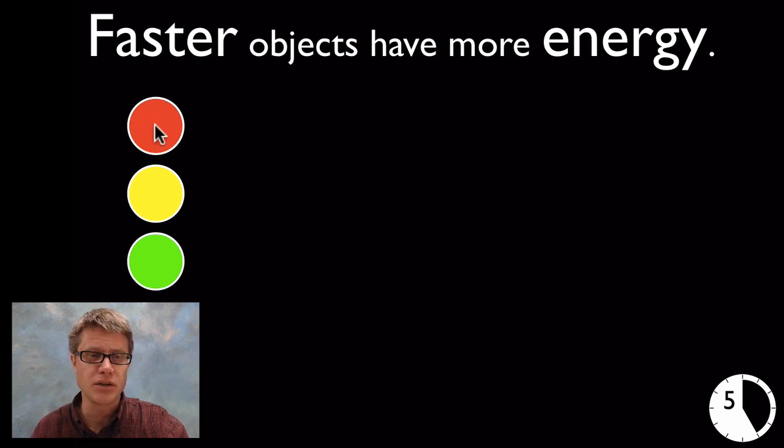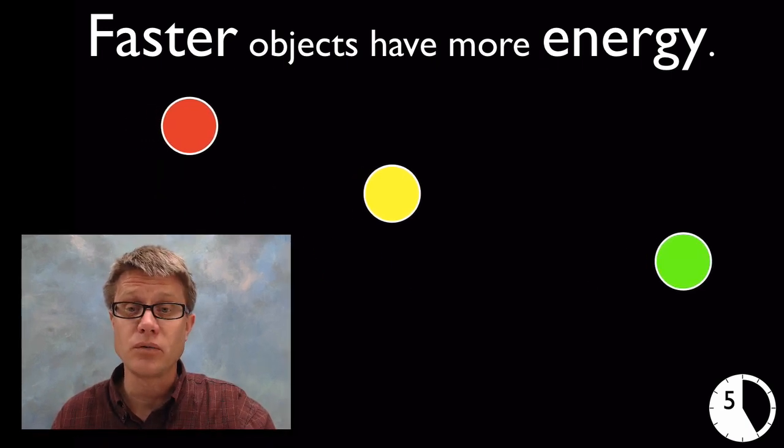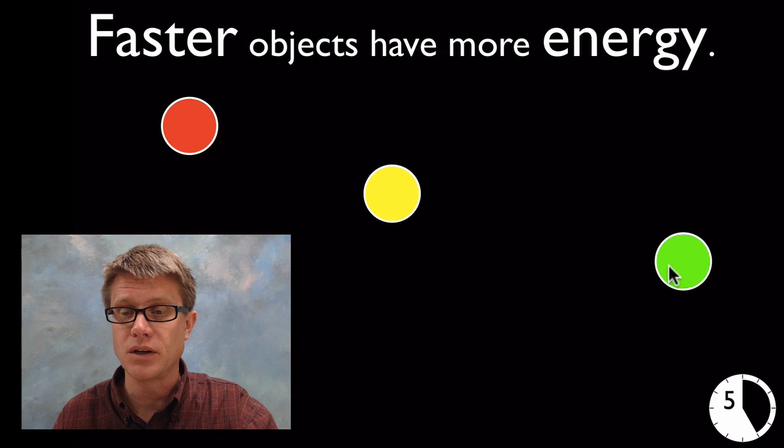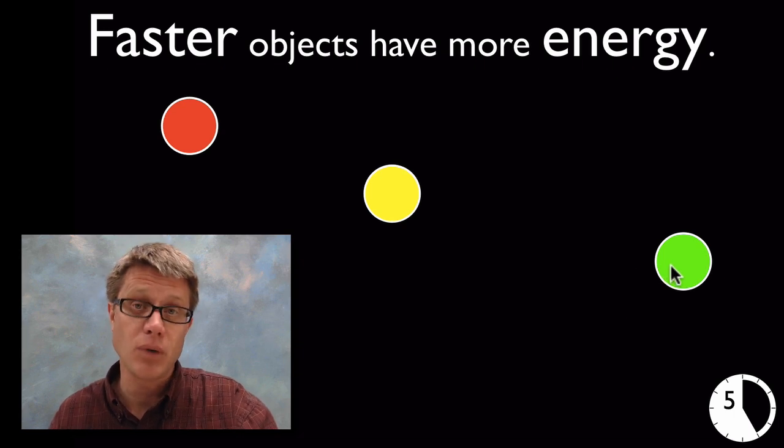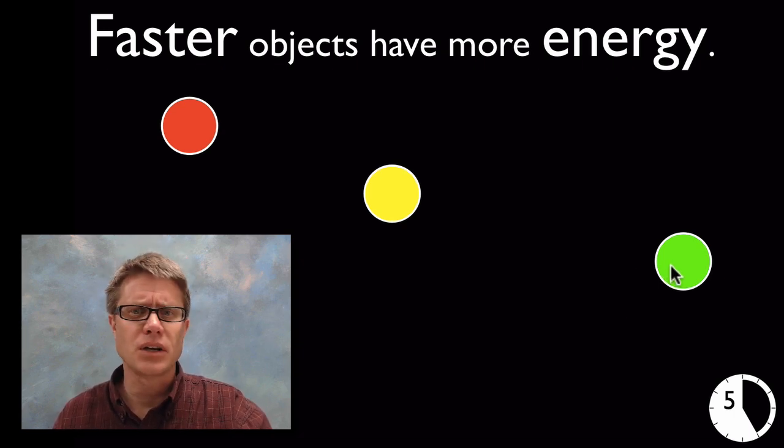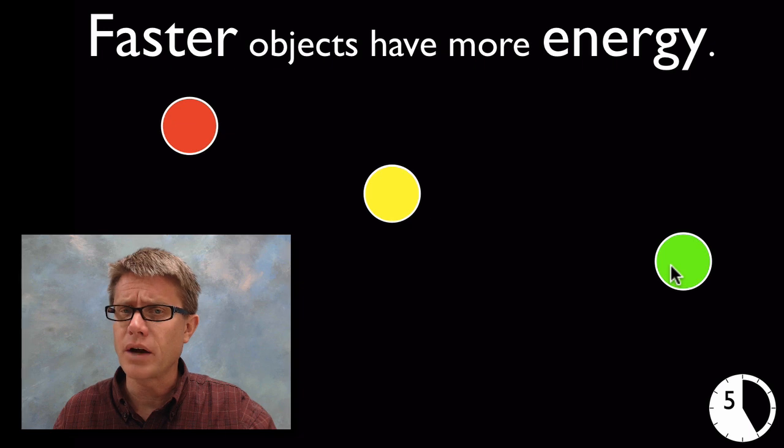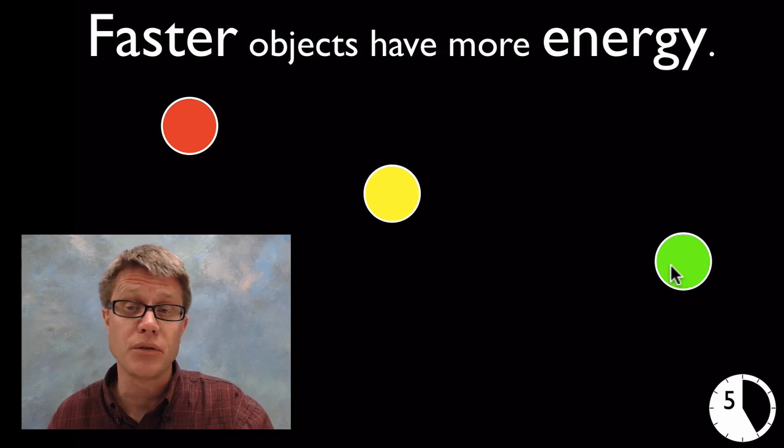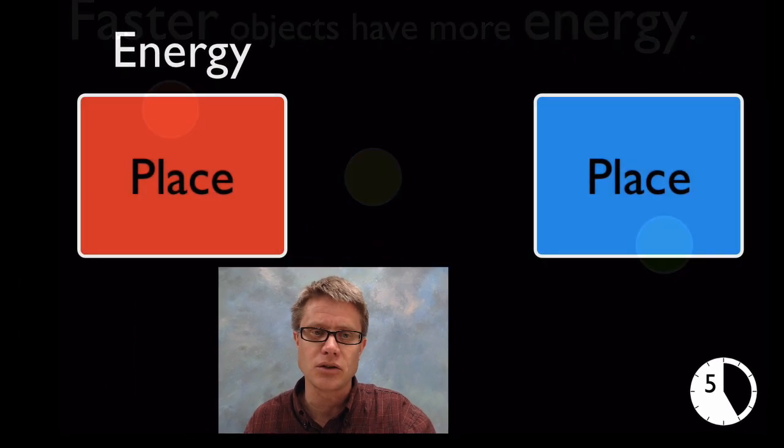And the faster they move the more energy they have. And so if we had these three objects here that are colored differently but if they had the same mass and they were to move which one of those would have more energy it's going to be the one that's moving the fastest at any given moment. And you know this. If you were to get hit by a snowball you'd rather get hit by one that's going really slow than one that's going fast. And that's because it's going to have less energy.